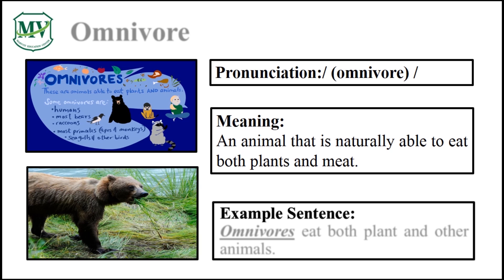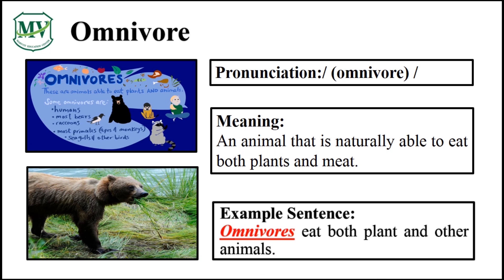Please repeat the word after me. Omnivore. Omnivores eat both plants and other animals. Can you try reading the sentence on your own? Great!